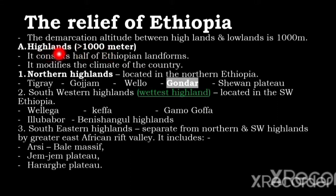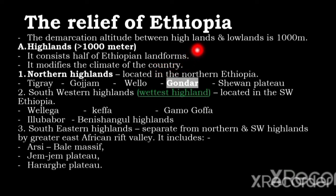The Ethiopian land mass is classified into two: highlands and lowlands. Highlands are characterized by elevations above one thousand meters. They consist of half of Ethiopia's land forms and modify the climate of the country. Highlands are a source of many rivers and tributaries, have favorable climate for Ethiopian population, plants and animals, and consist of large farmlands with high population concentration.